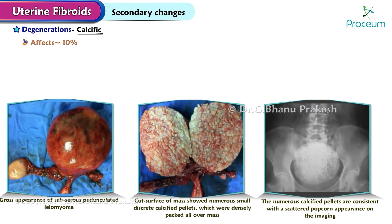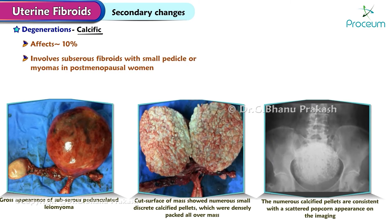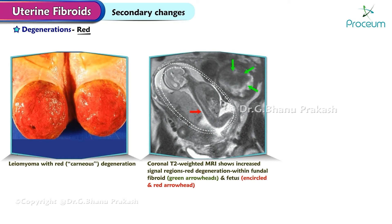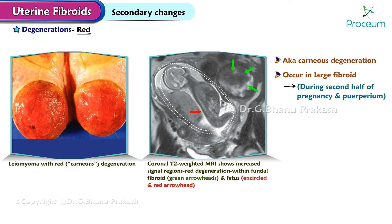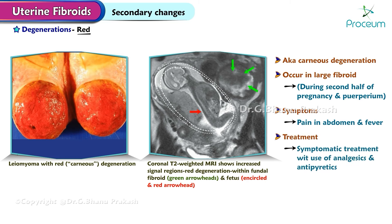Calcific degeneration affects approximately 10%, and usually involves the subserous fibroids with small pedicle or myomas in postmenopausal women. Red degeneration, also known as carneous degeneration, tends to occur in large fibroids, particularly during the second half of pregnancy and puerperium. Symptoms of red degeneration may include pain in the abdomen and fever. Treatment involves symptomatic treatment with analgesics and antipyretics for pain relief.